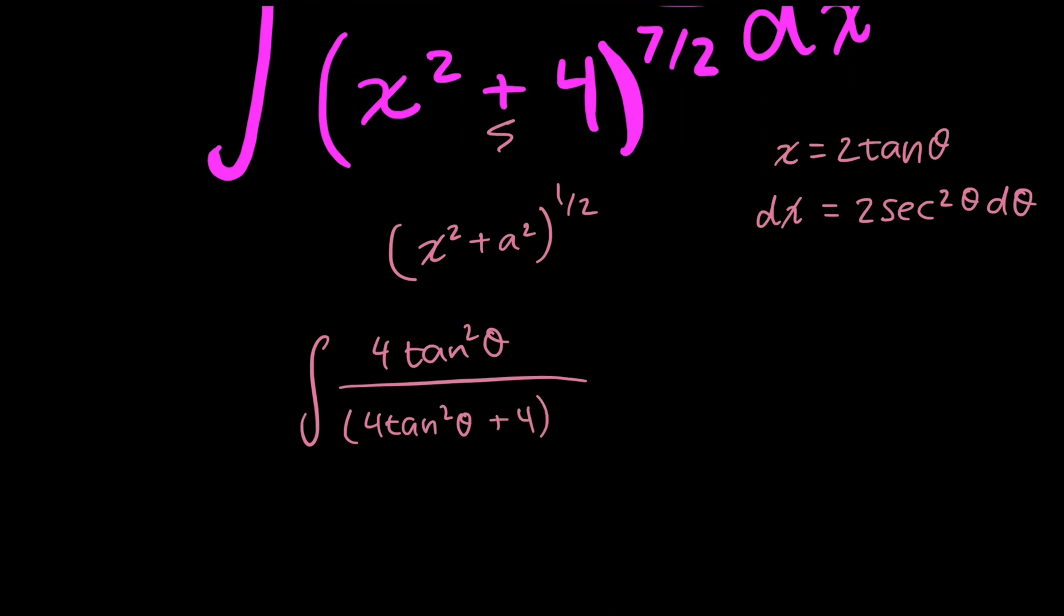plus 4 raised to the power of 7 over 2 times my dx, which I just defined as 2 secant squared theta, so times 2 secant squared theta d theta.